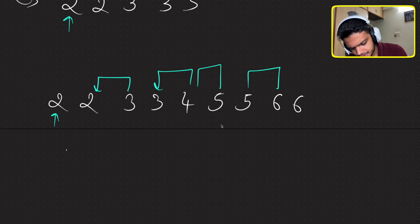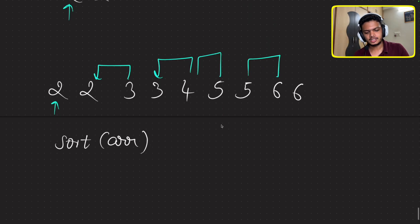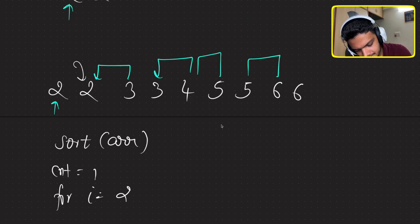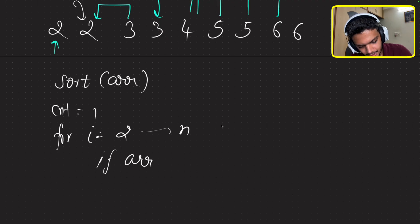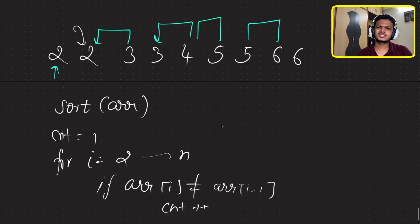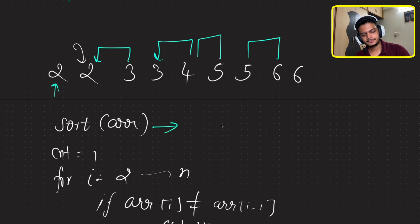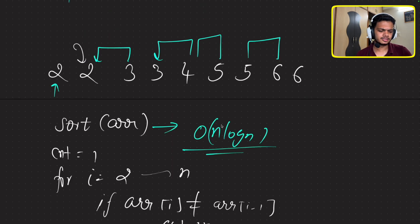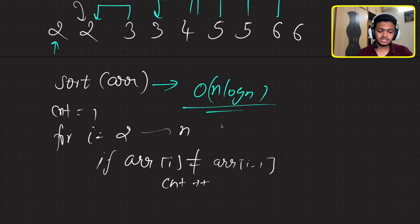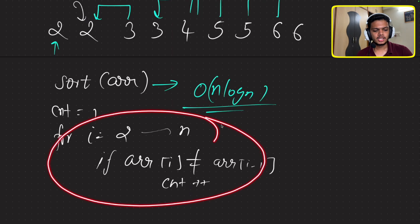For the sorting approach, sort the array and run a simple loop checking if an element is not equal to the previous element, then update the count. Initialize your count with 1, start from the second element, and if array[i] != array[i-1], increment the count. Time complexity: sorting costs O(n log n), and the loop is O(n), so overall O(n log n). Space complexity is O(1) since no extra arrays are created.